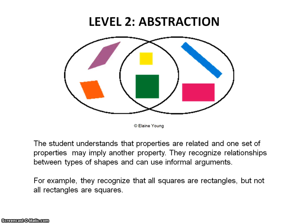Level 2 is Abstraction. The student understands that properties of shapes are related and that one set of properties may imply another. For instance, if a square has a right angle, we can also say that the measure of its angle is 90 degrees. Students can recognize relationships between types of shapes and even use informal arguments to discuss why a square is a rectangle — for example, they recognize that all squares are rectangles, but not all rectangles are squares, and they may be able to discuss this.